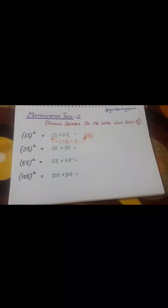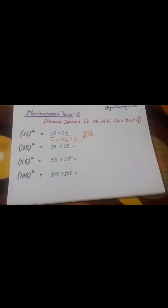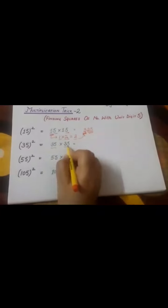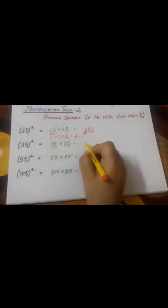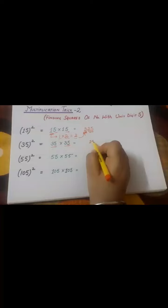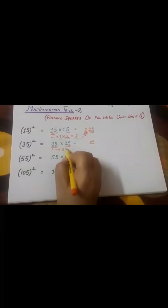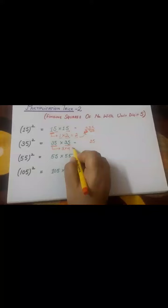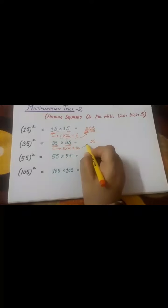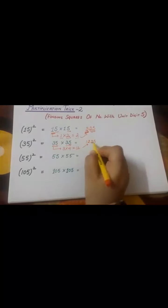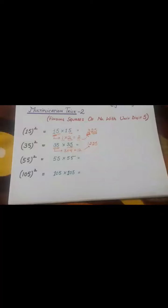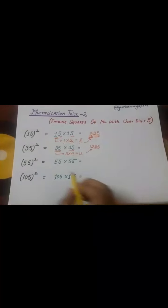Similarly, we'll be finding out the squares of other numbers as well. Let's start: 35 into 35. Same, 5 and 5, so here we have 25. Then we have 3. 3 multiplied to its successor, which is 4, so answer will be 12. We'll keep it here: 1225. Next one...